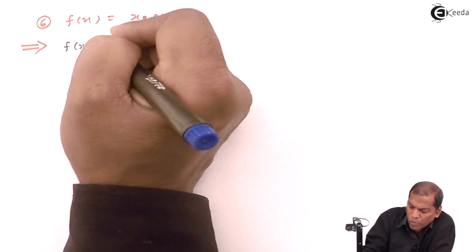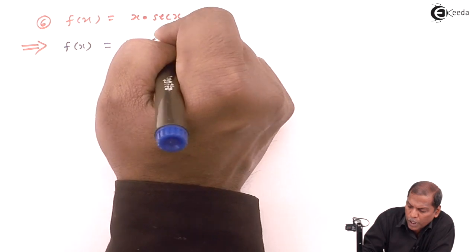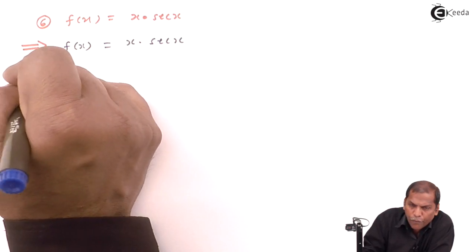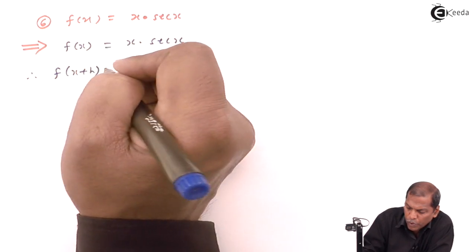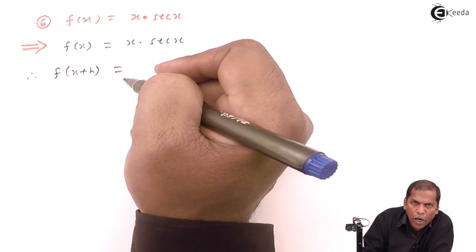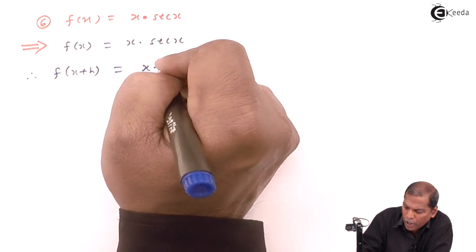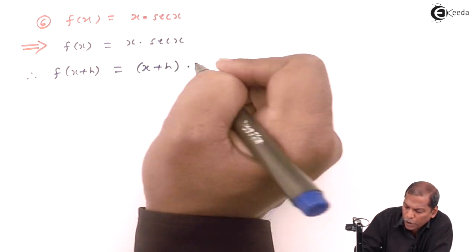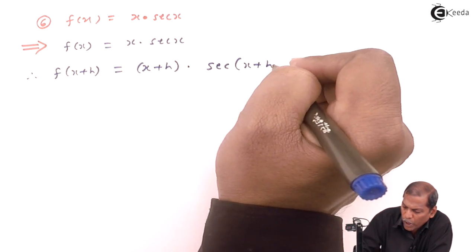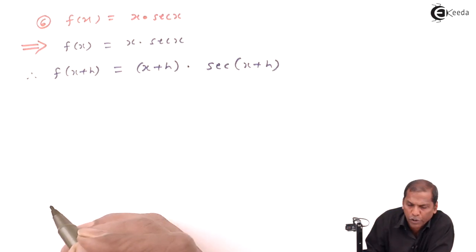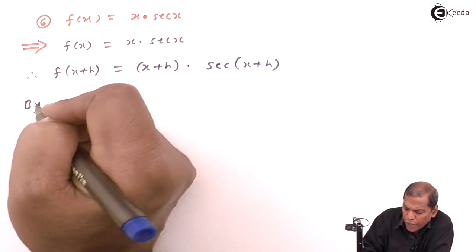First of all, f(x) = x·sec(x). Therefore the next step is f(x+h) — it means wherever we have x, we write x+h — so that equals (x+h)·sec(x+h). Then by using the first principle of derivative: